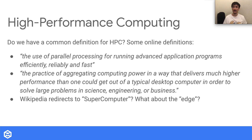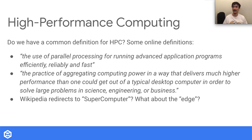The first definition describes HPC as the use of parallel processing for running advanced application programs efficiently, reliably, and fast. This is my favorite one, as it is fairly general to include a lot of application space, including at the edge, in embedded environments, or even in everyone's pockets with smartphones. Looking up on Wikipedia it's a bit more old school, and high-performance computing redirects directly to a supercomputer.